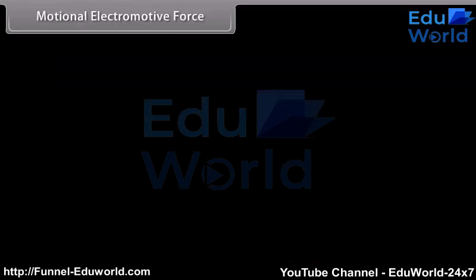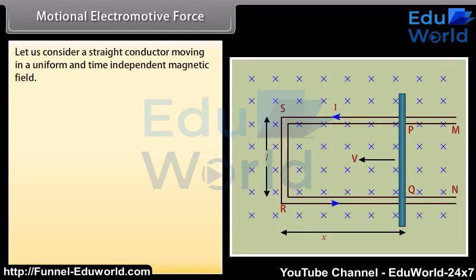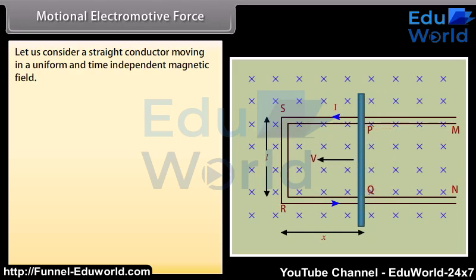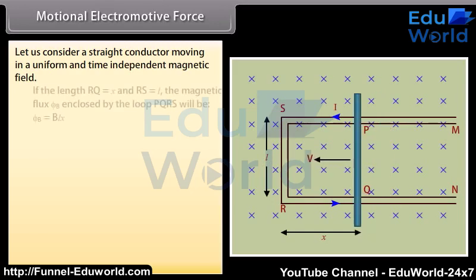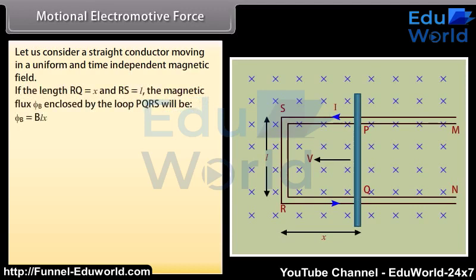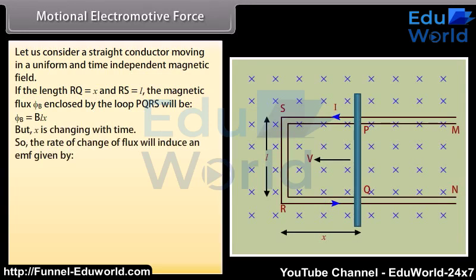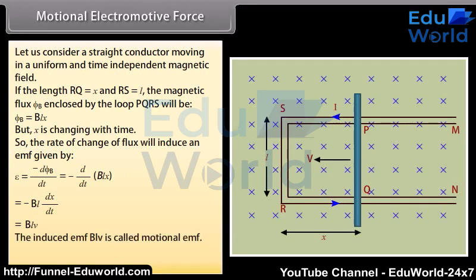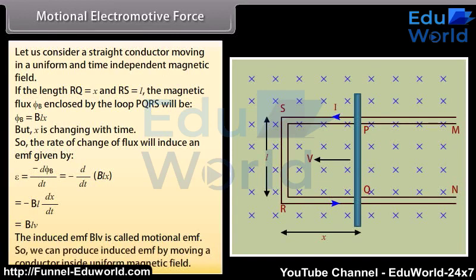Motional Electromotive Force: Consider a straight conductor moving in a uniform and time-independent magnetic field. Let a rectangular conductor PQRS in which the conductor PQ is free to move. The rod PQ is moved with a constant velocity V in a uniform magnetic field B perpendicular to the plane of the system. If the length RQ is x and RS is L, the magnetic flux Φ_B enclosed by the loop PQRS is equal to BLx. Since x is changing with time, the rate of change of flux induces an EMF given by −d(BLx)/dt = BLV. The induced EMF BLV is called the motional EMF. Thus, we can produce induced EMF by moving a conductor inside a uniform magnetic field.